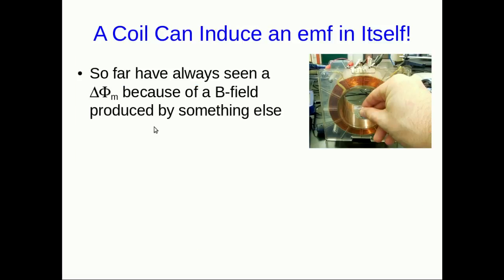Notice that the flux through coils that we've looked at has always been a flux created by something else. So in the original example we saw we had the coil, we had this permanent magnet, and the flux through the coil was because of the B field produced by that permanent magnet.